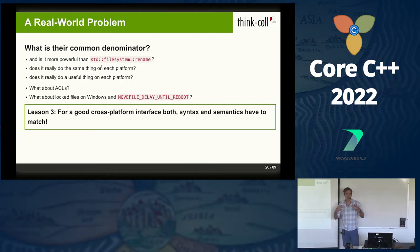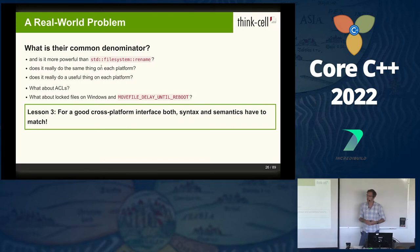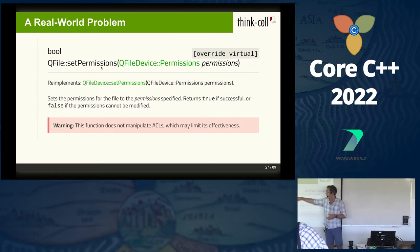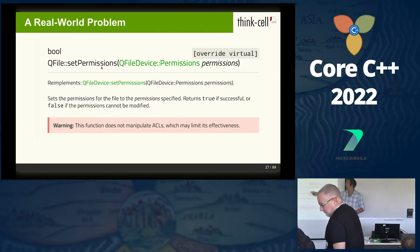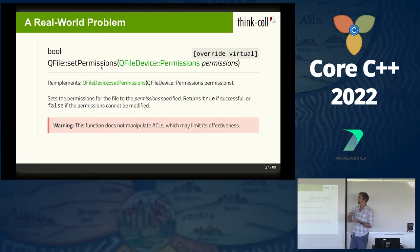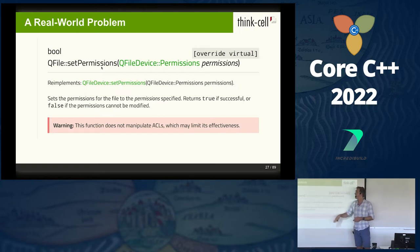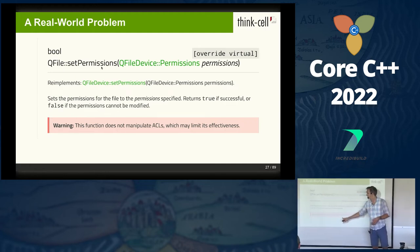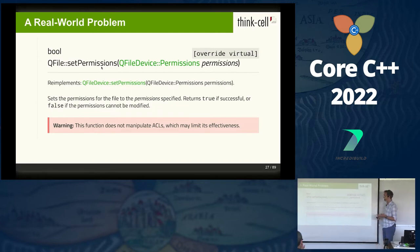For writing a good cross-platform interface, we have to find something where we can have the same syntax on each operating system, but also make sure the same thing happens on each operating system. Otherwise we end up like this Qt example: Qt's QFile has a setPermissions API that takes a permissions object representing the POSIX permissions model — readable, writable, executable bits for user, group, and other. That's also implemented that way on Windows, where it's certainly not a representation of the Windows permissions model. As a big warning now says, it's not even a good representation of the POSIX permissions model on most operating systems either.